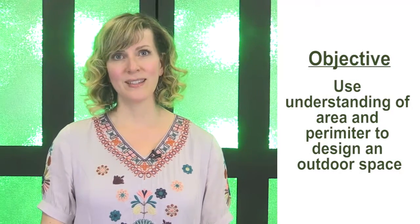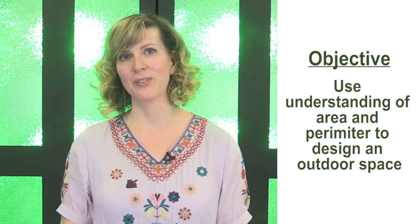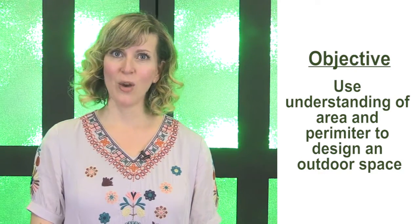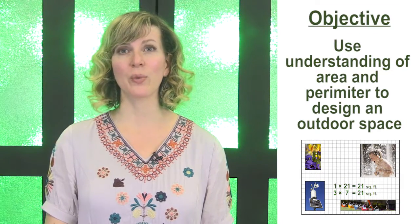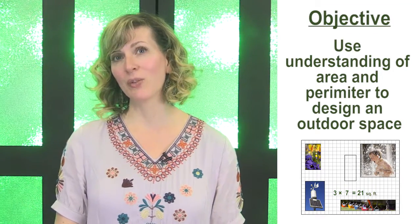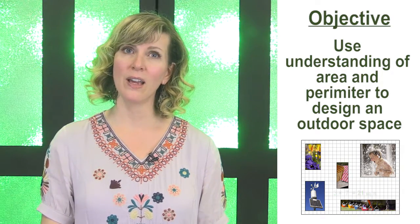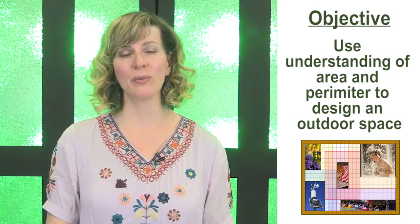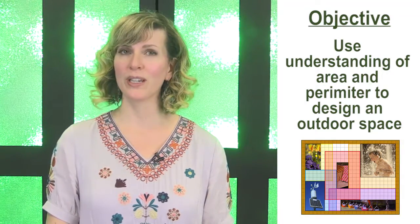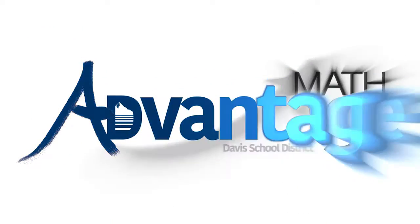The objective for this lesson was to use understanding of area and perimeter to design an outdoor space. We met this objective by writing factor pairs for each of the features we wanted to use and creating arrays that fit the square feet of the features for our design. We then had to make sure that we had 1 foot from the outer edges and 3 feet for a walking path between each of the features.